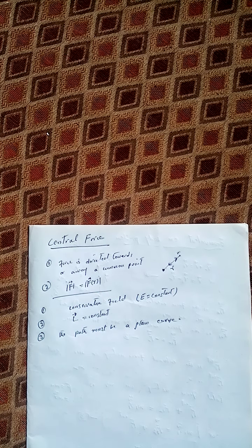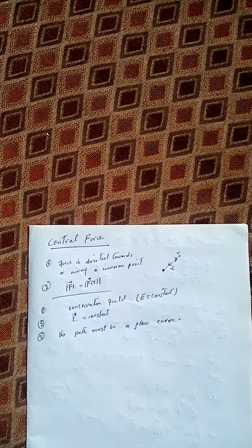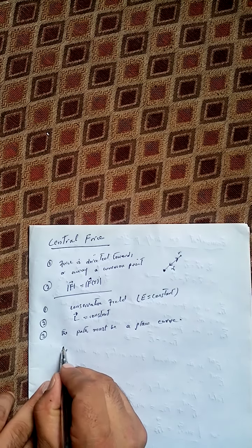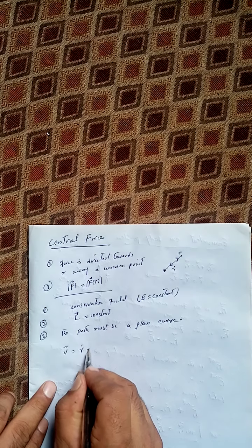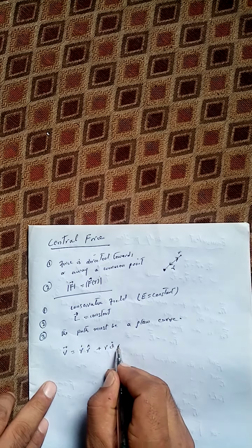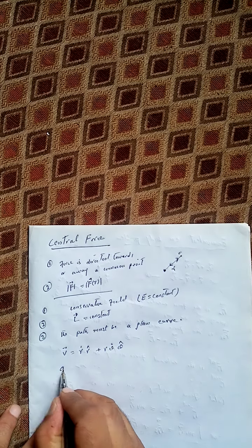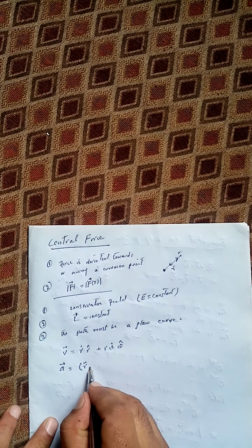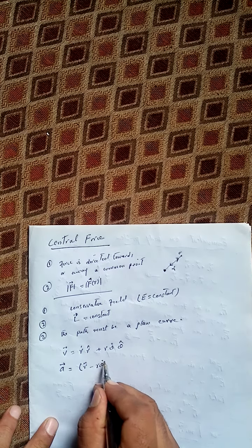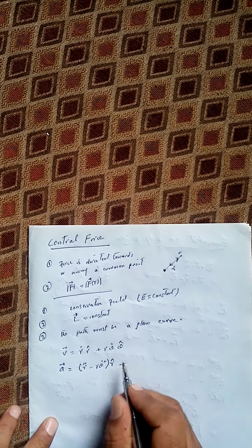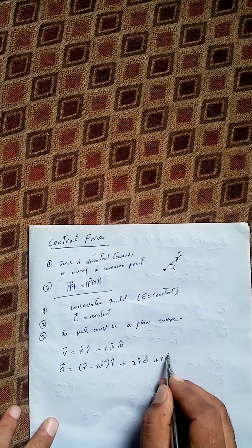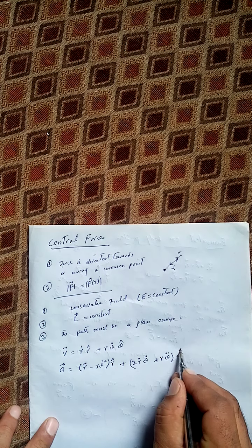We also discussed the plane polar coordinate system, and in that system we derived two relations. One is for the velocity: v = ṙ r̂ + rθ̇ θ̂. We also calculated the relation for acceleration: a = (r̈ − rθ̇²) r̂ + (2ṙθ̇ + rθ̈) θ̂.